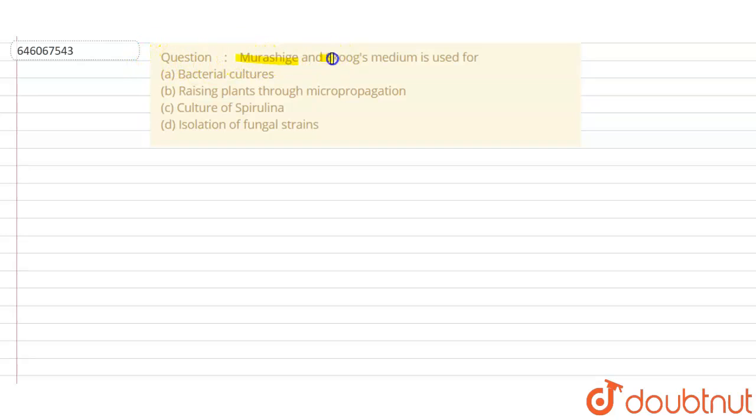Morashic and Skog medium is used for - so we have to tell what basically is the purpose of this medium. Option A: bacterial culture. Option B: raising plants through micropropagation. Option C: culture of Spirulina. And option D: isolation of fungal strains.